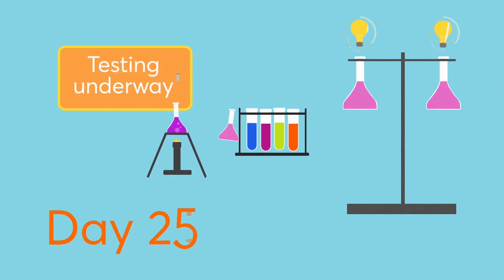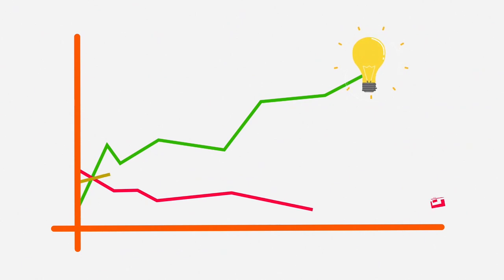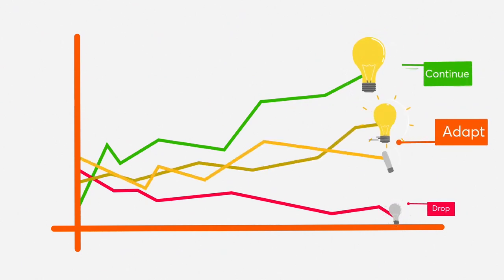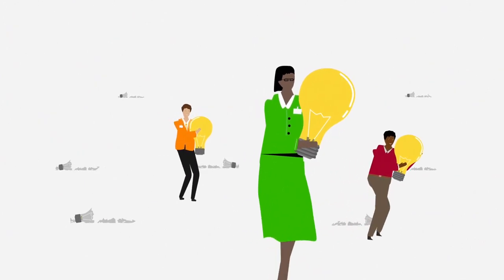By day 25 the testing is well underway. They collect real-time data to decide which ideas to drop, adapt or continue. They prioritize the ideas that seem to be helping people the most.